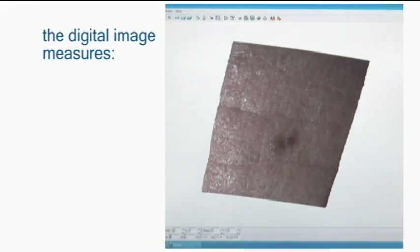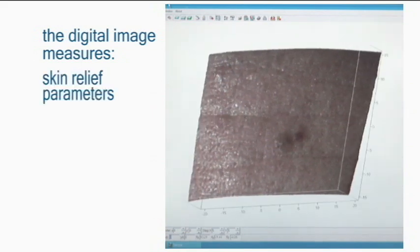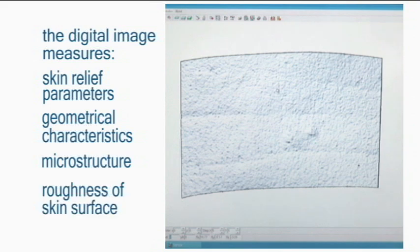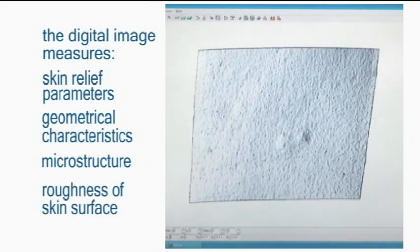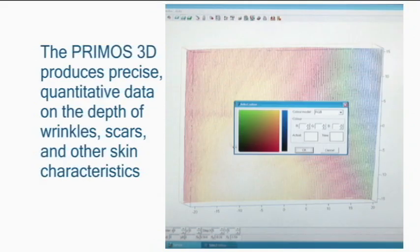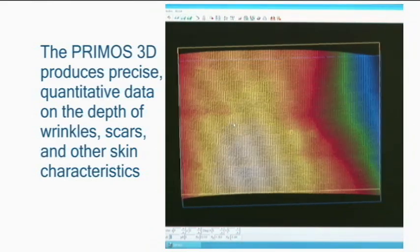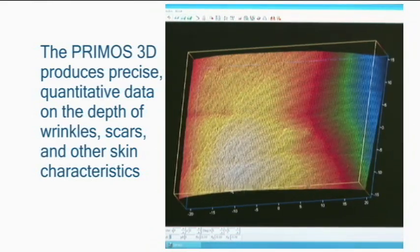The digital image produced can provide direct measurement of skin relief parameters, geometrical characteristics, microstructure, and roughness of the skin surface. Never before has it been possible to produce precise, quantitative data on the depth of wrinkles, scars, and other skin and body characteristics.